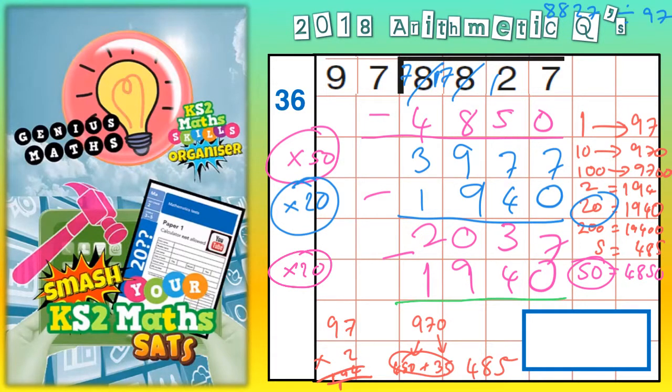So, 7 subtract 0 is 7. 3 subtract 4 you can't do, so you need to borrow from the 0. But you can't borrow from a 0, so you need to go next door. So you borrow from the 2 becomes 1. The 1 that you borrowed turns that into 10. And borrow from the 10, that becomes 9. And the 1 you borrowed from there turns this 3 into 13.